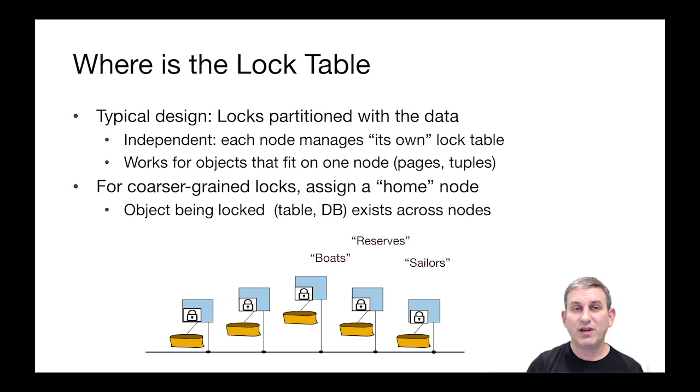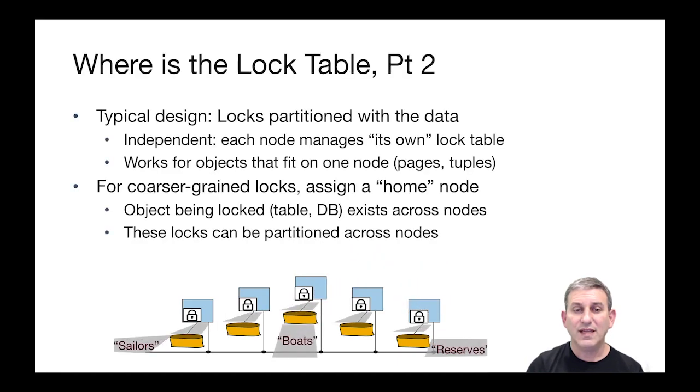For things like tables, they may be spread across multiple computers. So for these coarser-grained locks, we're just going to have to assign some home node for that. And that object that's being locked exists across all the nodes, but one of the nodes is the home node that's responsible for that lock.